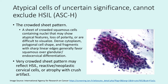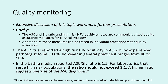The crowded sheet pattern can represent many things — glandular, reactive, or squamous. In the ASC-H category, you would see a sheet of crowded squamous cells with nuclei showing atypical features including loss of polarity, dense cytoplasm, polygonal cell shapes, and fragments with sharp linear edges suggesting squamous rather than glandular origin. A very crowded sheet pattern can reflect high-grade, reactive changes, or atrophy with crush artifact. When examining hyperchromatic crowded groups, look carefully at the edges and focus up and down — on exams, the edges usually provide clues to the cell origin and the intended diagnosis.